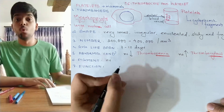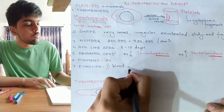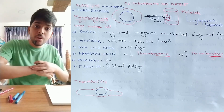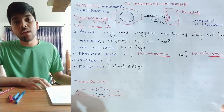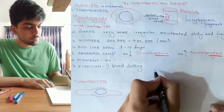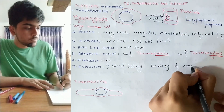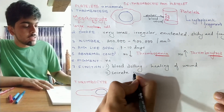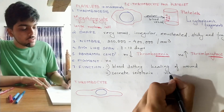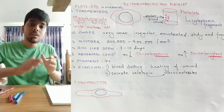Platelets don't have any pigment — there is no hemoglobin at all. Their functions: first, platelets are responsible for blood clotting in mammals. Whenever there is an injury or wound, the healing of that wound takes place through blood clotting, and platelets are the clotting factors responsible for this. Second, platelets also secrete serotonin, which is anti-inflammatory — it acts as a vasoconstrictor, and contracting blood vessels is one way to decrease inflammation.